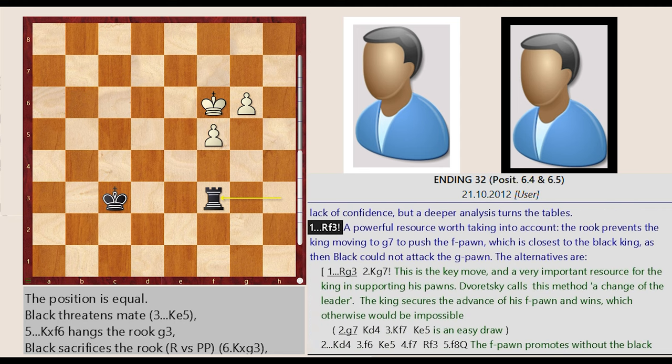Rook h3 f3. A powerful resource worth taking into account. The rook prevents the king moving to g7 to push the f-pawn, which is closest to the black king, as then black could not attack the g-pawn. The alternatives are: